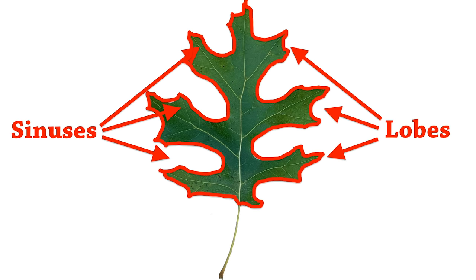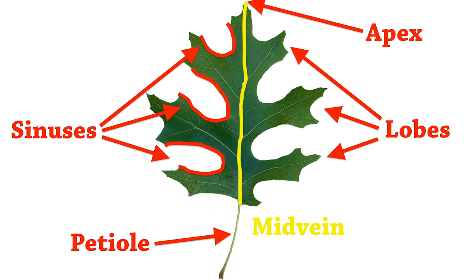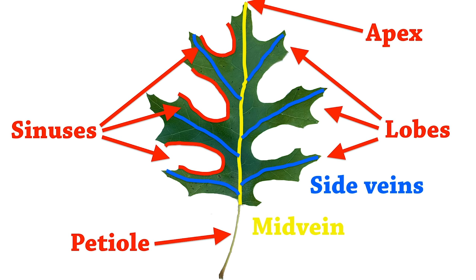The margin is the outer edge of the entire leaf. The apex is the tip of the leaf, and the stem of the leaf is called the petiole. The vein running up through the center of the leaf is the mid vein, and the veins branching off the mid vein are called side veins. I'm covering these terms because it will help later on in the video when identifying different trees.